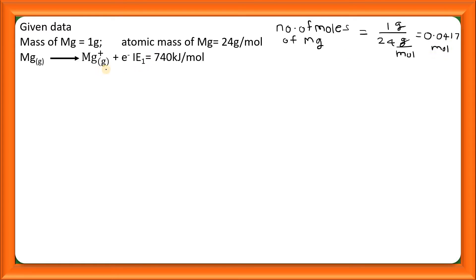We are given the first ionization energy of magnesium, that is 740 kilojoules per mole, and second ionization energy is 1450 kilojoules per mole. One gram of magnesium in gaseous state absorbs 50 kilojoules of energy. To convert 1 mole of magnesium from 0 oxidation state to plus 1, it requires 740 kilojoules of energy.